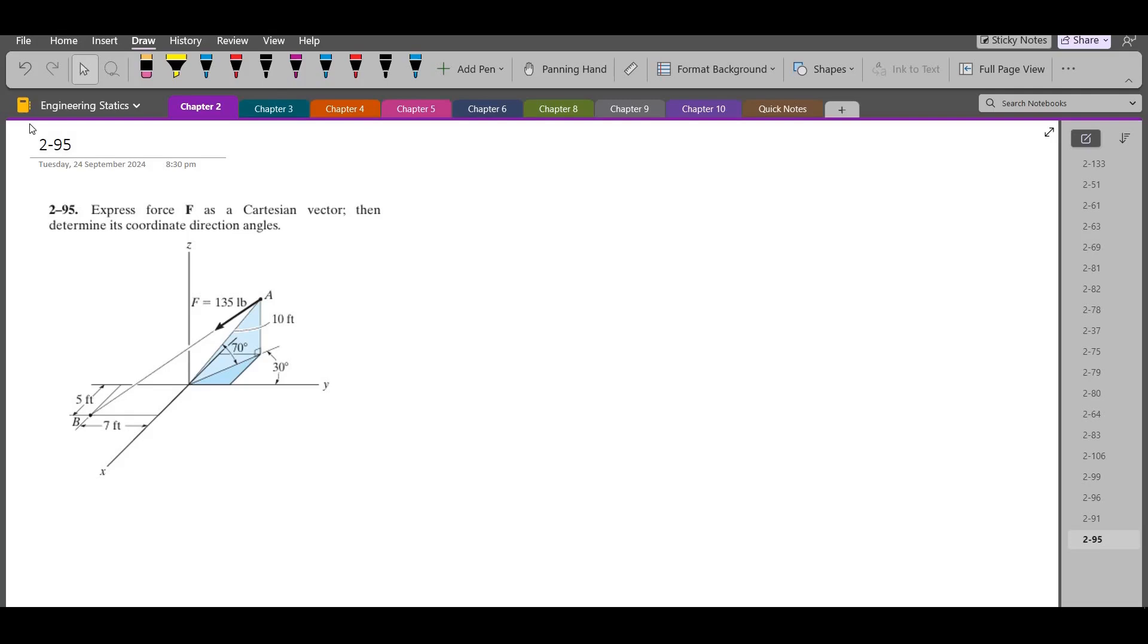Now to solve this problem, first of all, we have to find the coordinates of the points A and B along which the force F is located. So for the coordinates, for the point A, I have to draw the position vector from the origin to the point A and it would look something like this.